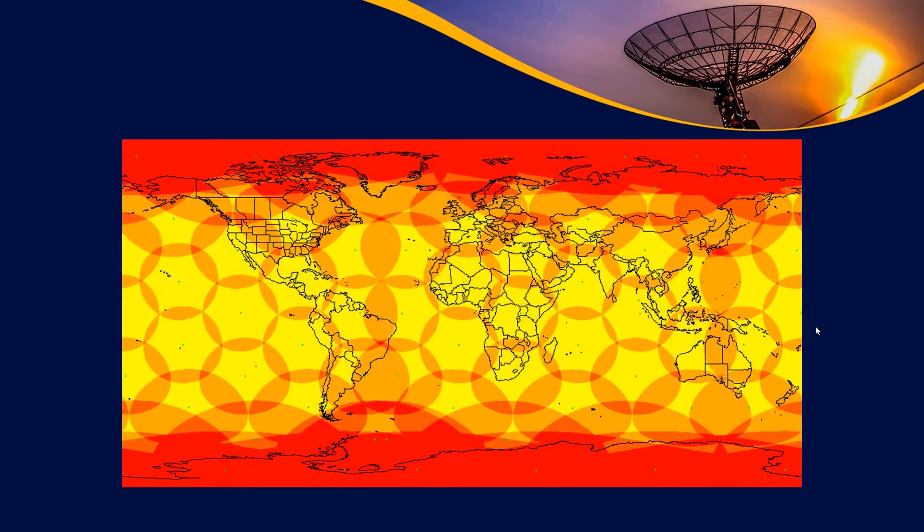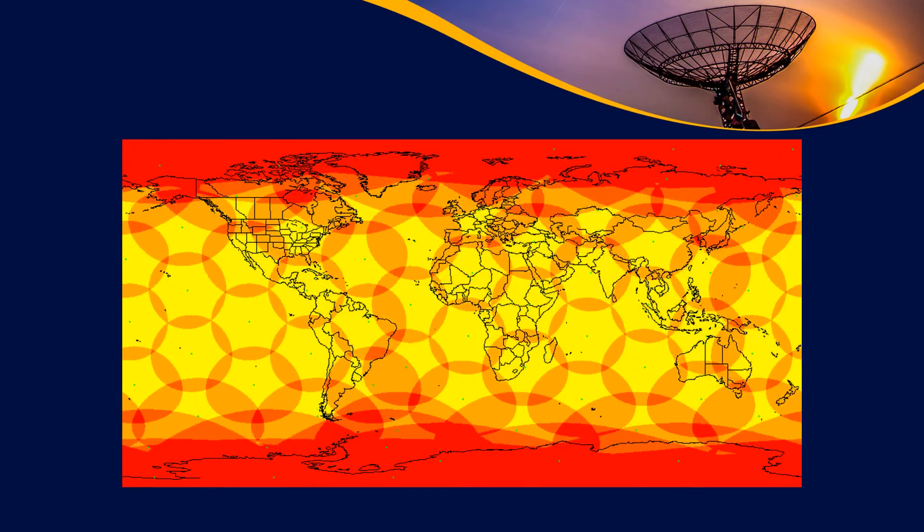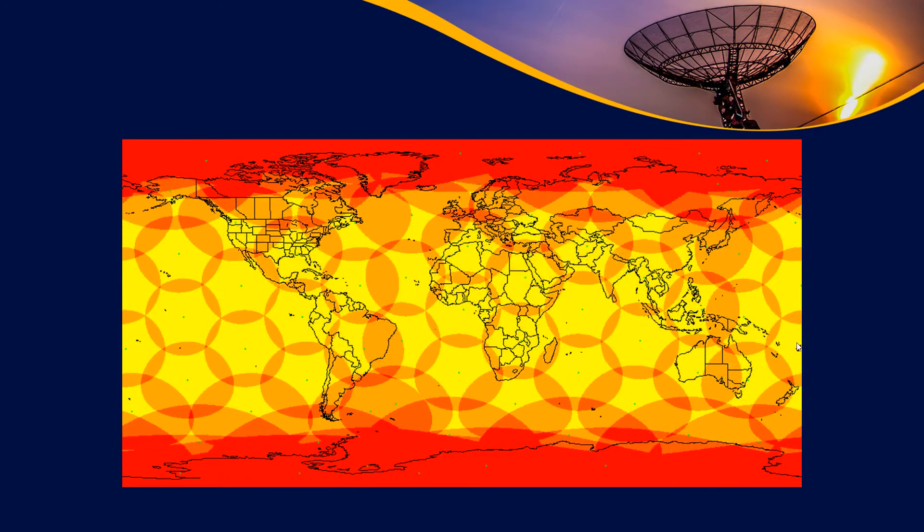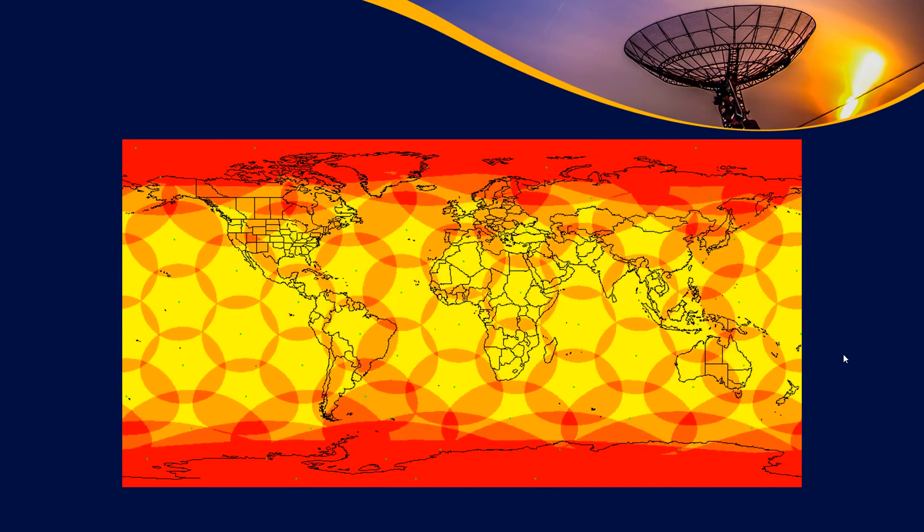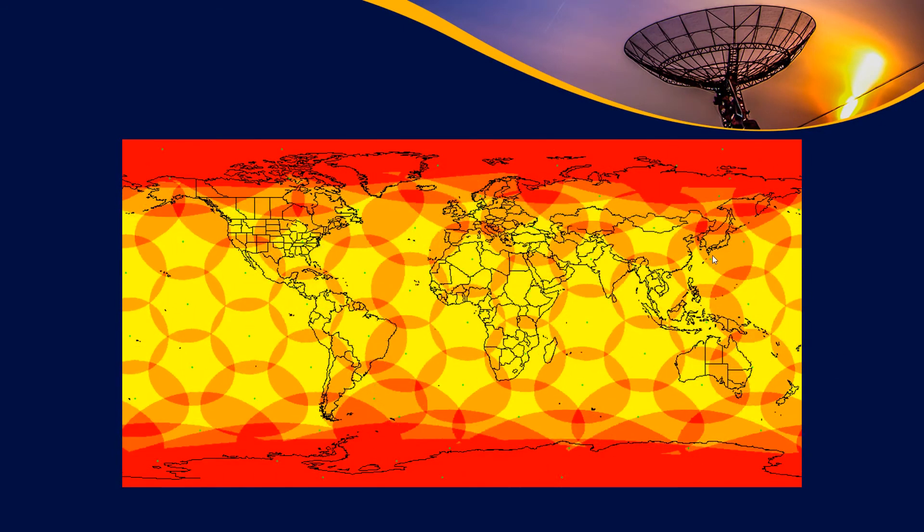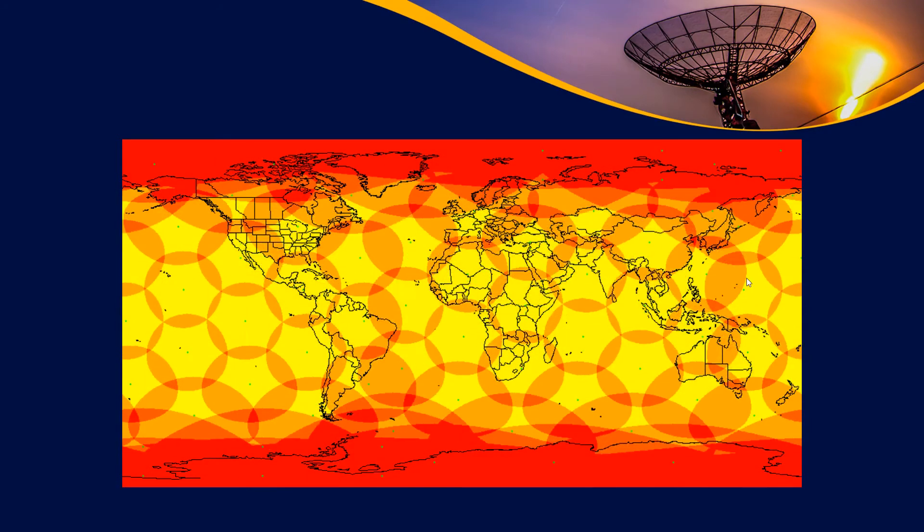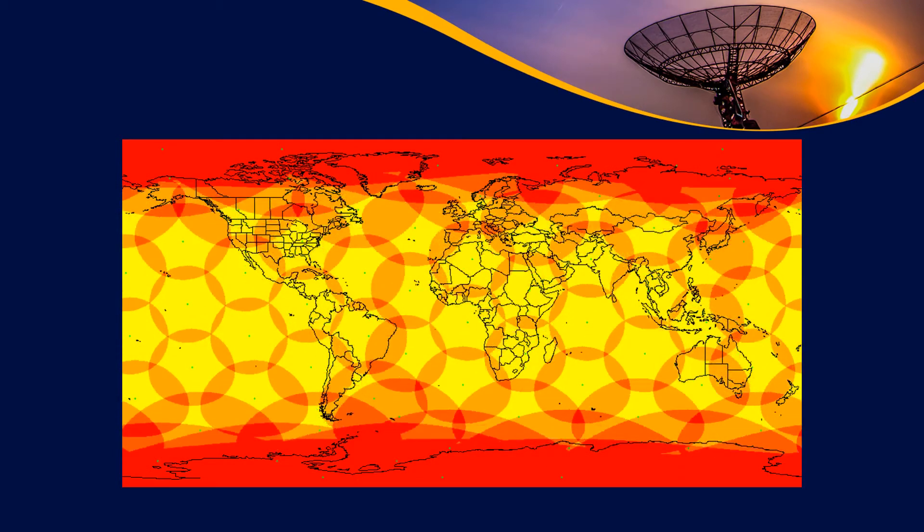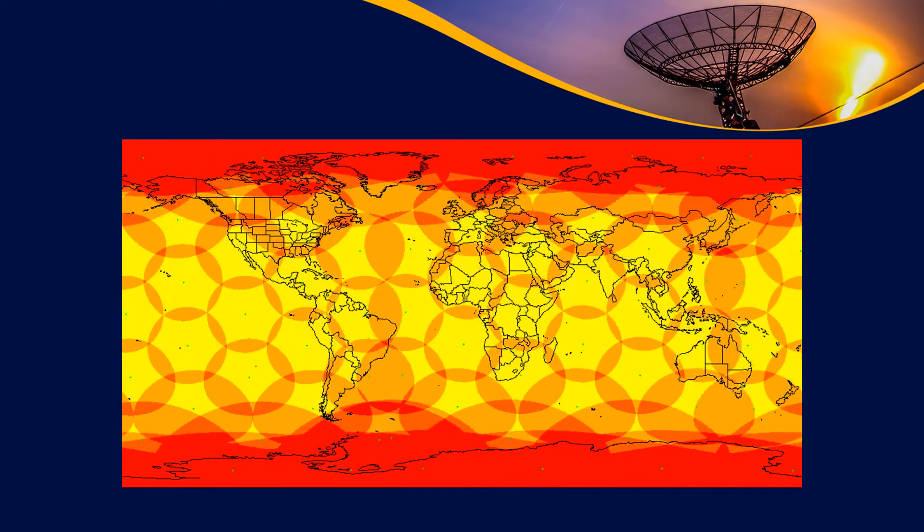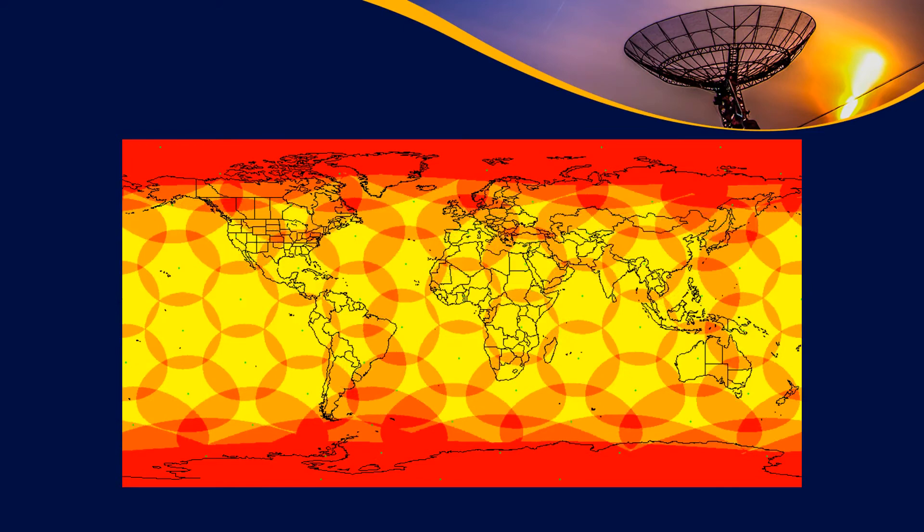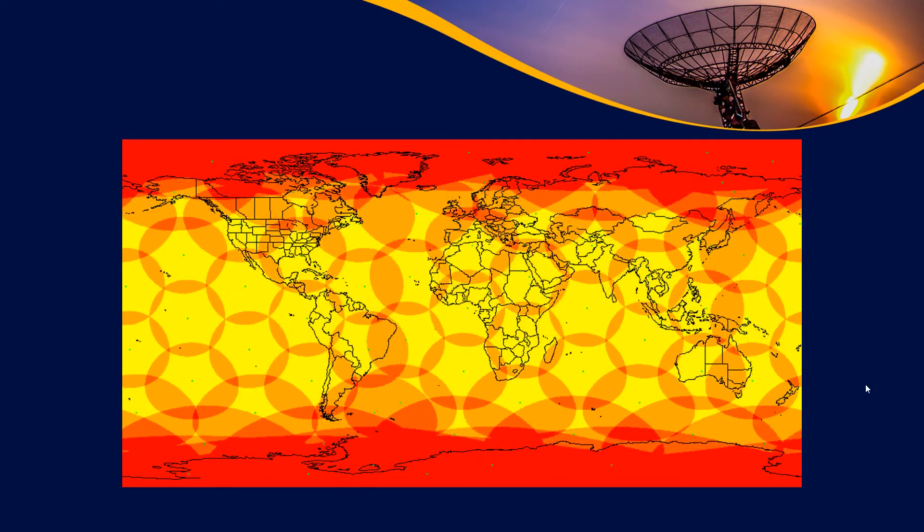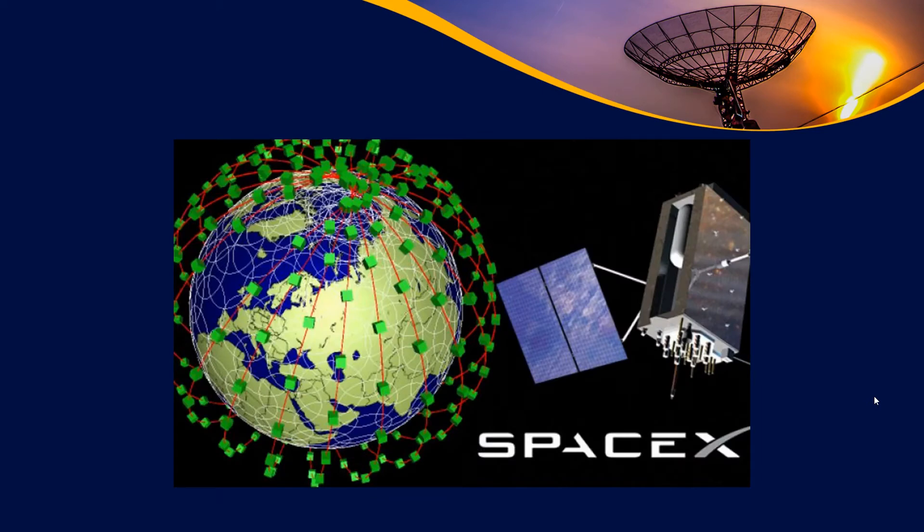Or maybe you decide that, like the SpaceX Starlink constellation, that you really only want to have very high angle satellite beams such that the satellites are almost directly overhead. Well, these bubbles become much much smaller. Iridium's relatively data phone signals doesn't take a whole lot of bandwidth, it still takes a fair bit, but you could make do with a much smaller antenna. With the internet you want much much higher bandwidth.